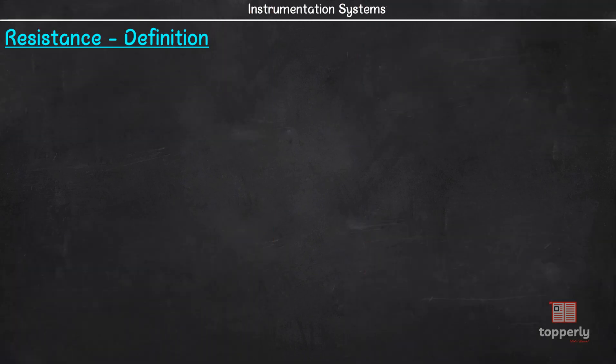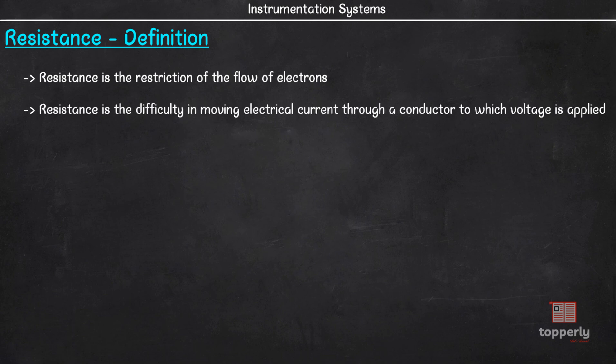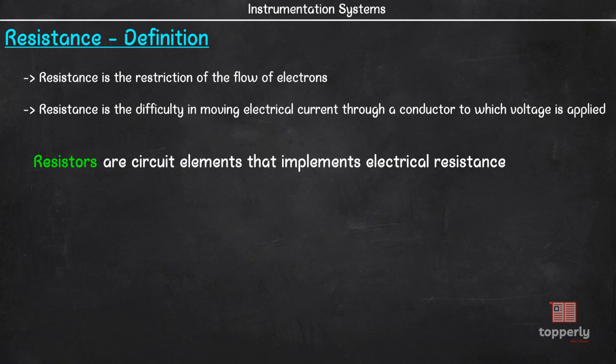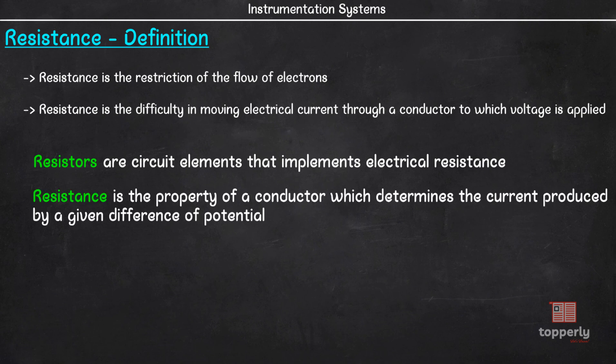Resistance is described in several ways. For instance, it is described as the restriction of flow of electrons. It is also described as a difficulty in moving electric current through a conductor to which a voltage is applied. Now a circuit element that implements electric resistance is called a resistor. However, a more appropriate description for resistance is that it is the property of a conductor which determines the current produced by a given difference of potential. This makes us remember that a resistor is a conductor first. So keep in mind that all conductors are resistive and resistors are used in circuits to regulate the strength of currents either by reducing the diameter of conductors or by introducing more obstacles.